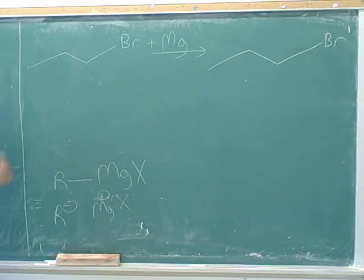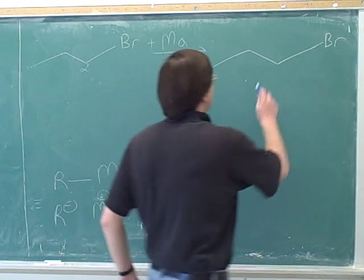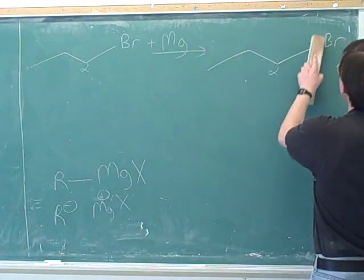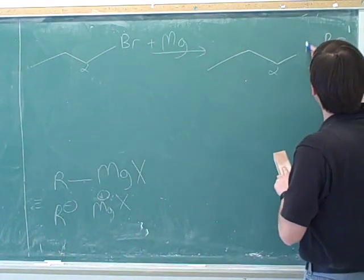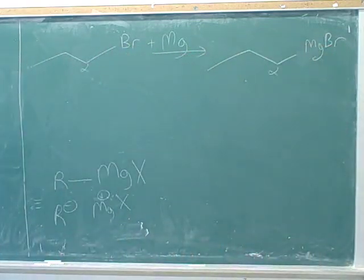We're simply going to insert the magnesium between the bromine and the alpha carbon. This is the alpha carbon. The alpha carbon is the one with the functional group. So we're going to insert the magnesium between the bromine and the alpha carbon. So this is the product. You simply insert the magnesium between the bromine and the alpha carbon. This is very simple to draw the product for this reaction.